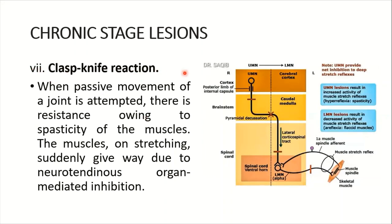The clasp knife reaction is also an upper motor neuron sign. What is it? When passive movement of a joint is attempted, there is resistance due to spasticity of the muscles, then the muscles on stretching suddenly give way due to Golgi tendon organ-mediated inhibition. This is the clasp knife reaction. So this covers the upper motor neuron lesions.